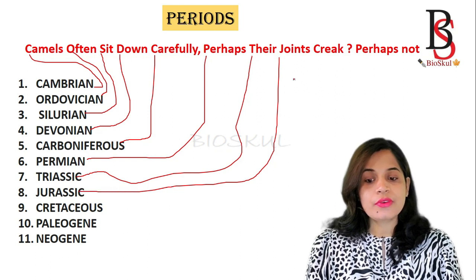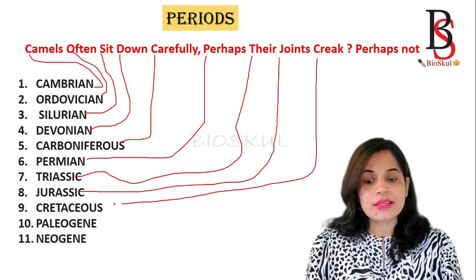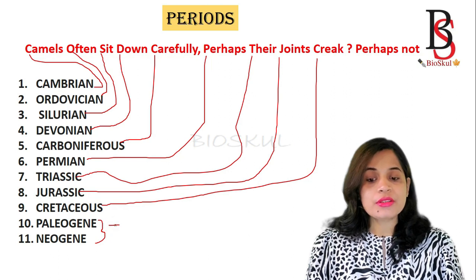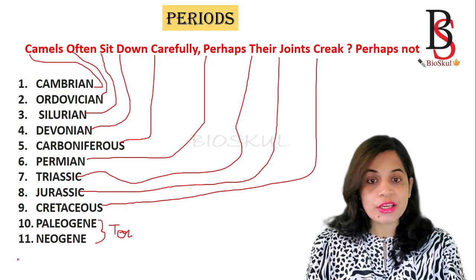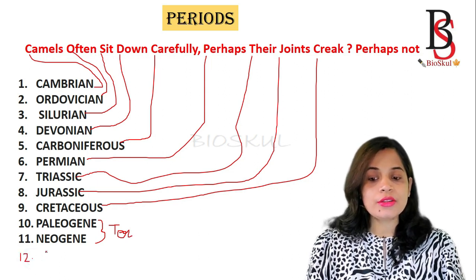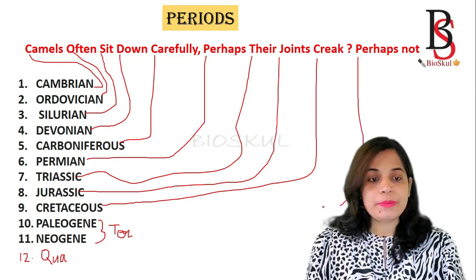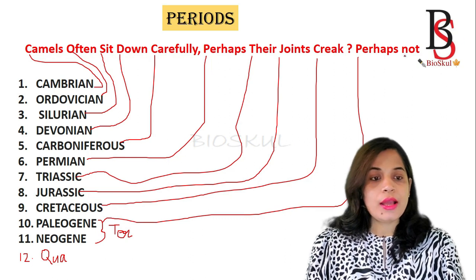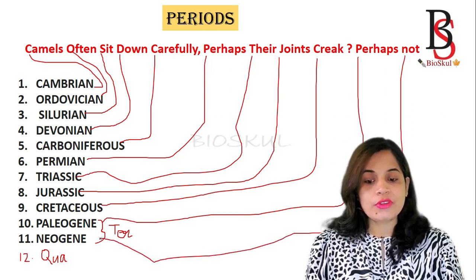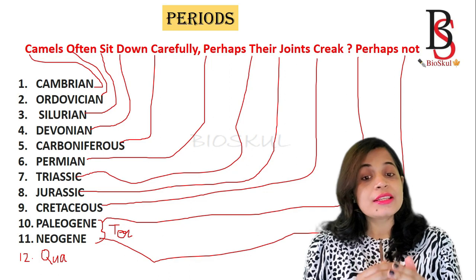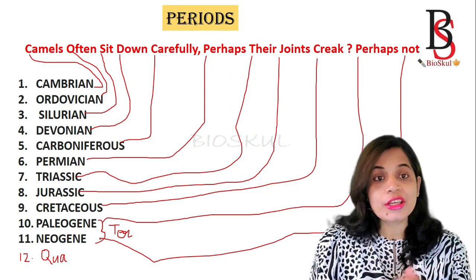Continuing: J is for Jurassic, C is for Cretaceous — these belong to the Mesozoic era. Then P is for Paleogene and N is for Neogene, which are Tertiary periods of the Cenozoic era. The Cenozoic era also has another period known as the Quaternary. So the full mnemonic is: 'Camels Often Sit Down Carefully Perhaps Their Joints Creak Perhaps Not.'